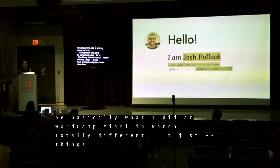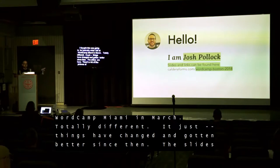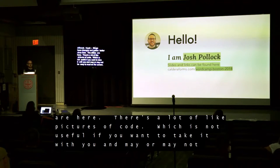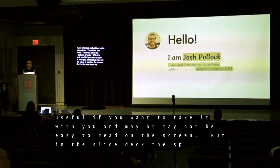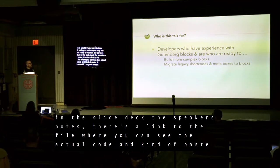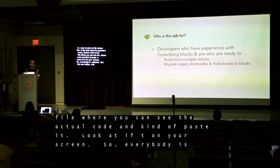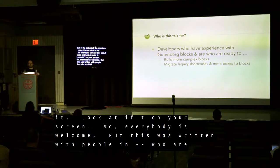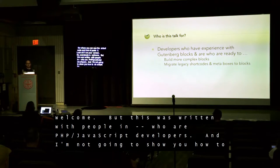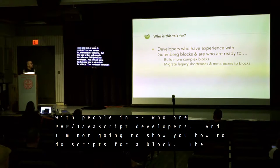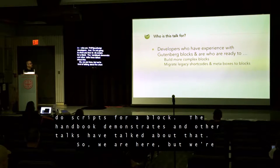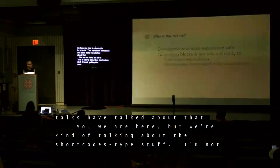The slides are here. There's a lot of pictures of code, which is not useful if you want to take it with you, but in the slide deck speaker's notes there's a link to a file where you can see the actual code and paste it to look at on your screen. Everybody's welcome, but this was written with people who are PHP and JavaScript developers. I'm not going to show you how to enqueue scripts for a block — the handbook demonstrates that and other talks have covered it. We're talking about shortcodes-type stuff; I'm not going to get into meta boxes, but how do blocks start to get more complex?